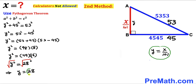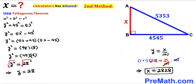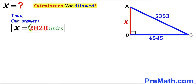Now recall that y = x/101 and our y value is 28. Substituting: 28 = x/101. Multiplying both sides by 101, the 101s cancel and we get x = 101 × 28 = 2828 units. Thus x = 2828 units by the second method as well. Thanks for watching, and please don't forget to subscribe for more exciting videos.